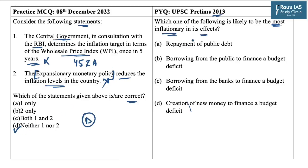The answer to the previous year question is also D, because the creation of new money in the economy is the most inflationary in its effect.